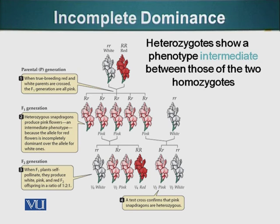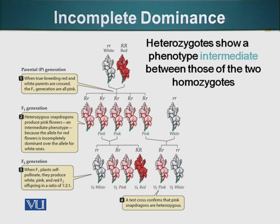We have two pink flowers, so the ratio is 1:2:1 — one white flower, two pink flowers, and one red flower. The gene for the white flower was segregated when the F1 generation made its gametes, which is the only reason we were able to get white flowers. Additionally, a test cross between a heterozygous pink flower from the F1 generation and the homozygous white flower shows that 50% of the progeny are heterozygous and 50% are homozygous recessive.